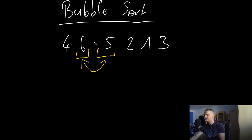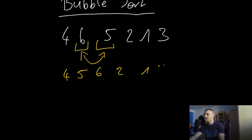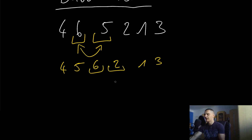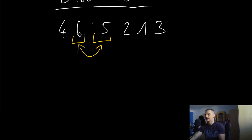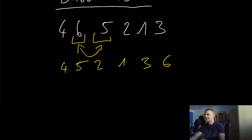After swapping we get [4, 5, 6, 2, 1, 3]. Then we compare six to two — six is larger than two and comes before it, so we swap again to get [4, 5, 2, 6, ...]. This continues and six ends up at the end, giving us [4, 5, 2, 1, 3, 6].